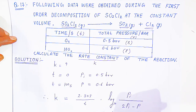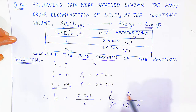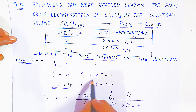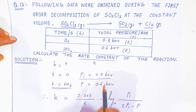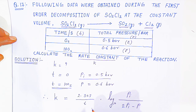Now just put all the values. t is 100 seconds, initial pressure is 0.5 bar, and pressure after 100 seconds is 0.6 bar. Put in the values and multiply — you will get the rate constant.